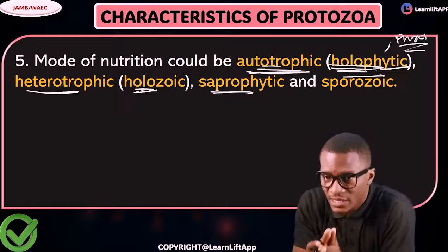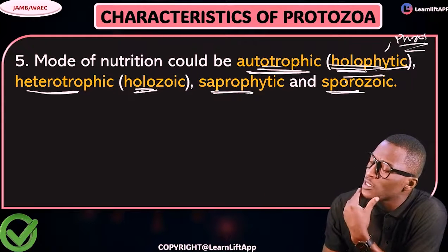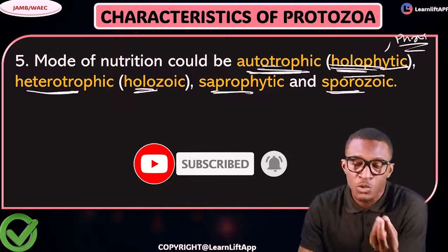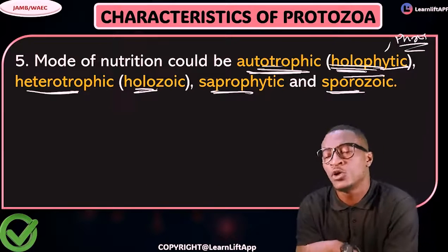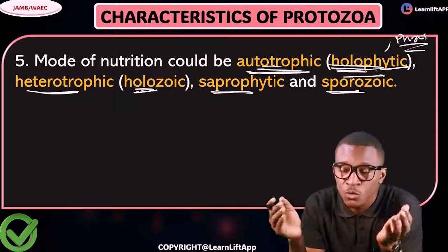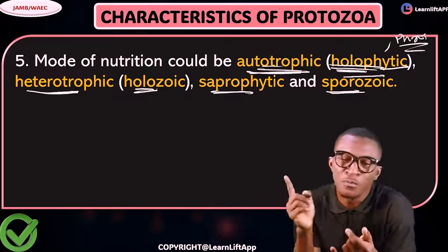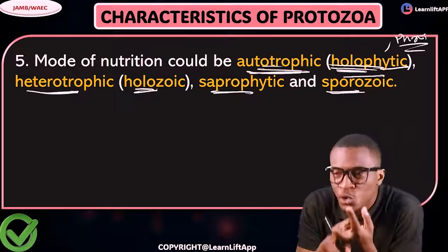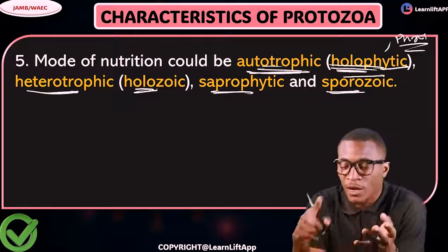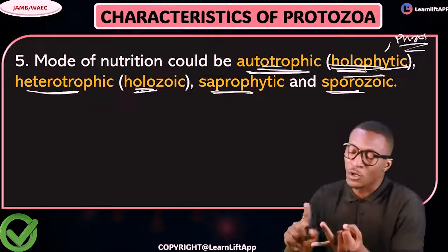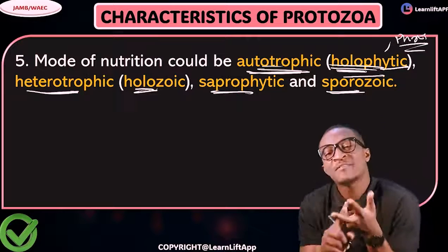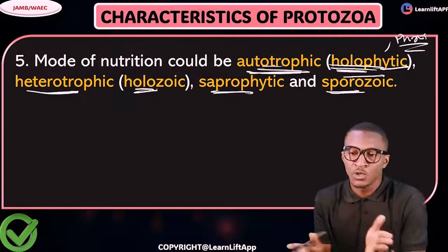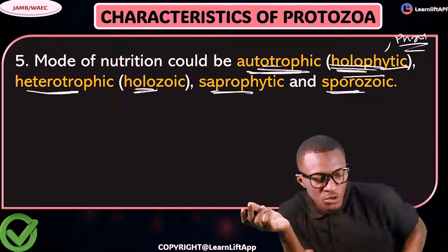We also have saprophytic nutrition, where they feed on dead and decaying materials. And we have sporozoic nutrition, which occurs in organisms like Plasmodium and Trypanosoma. They stay in blood and depend on it, sucking fluid from the blood. So the four modes of nutrition in protozoa are: autotrophic (holophytic), heterotrophic (holozoic), saprophytic, and sporozoic. Nutrition will be our next chapter.